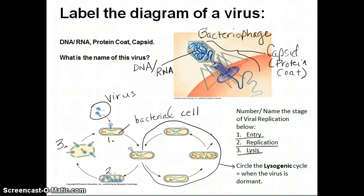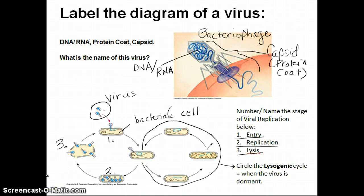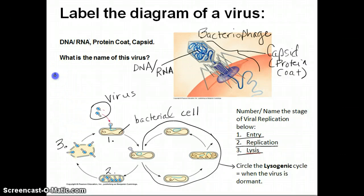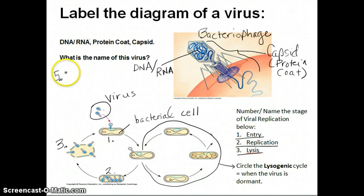Thankfully, we have a lot of cells, so when a few die it's not critical — it doesn't cause us to die. Viruses cannot reproduce on their own, which is why scientists classify them as non-living. So for number five on your notes: no, they cannot reproduce without the cell, and they are non-living.